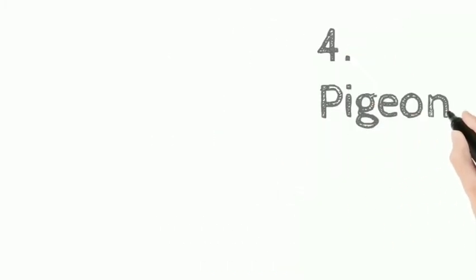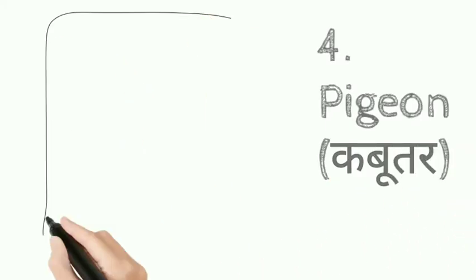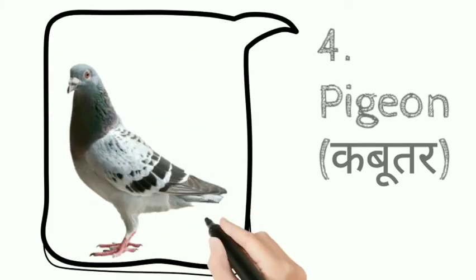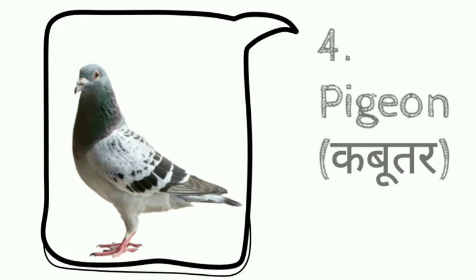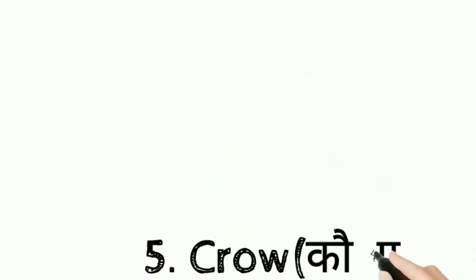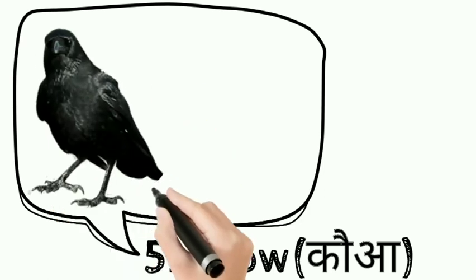Fourth: Pigeon, P I G E O N. Pigeon means kabooter. Fifth: Crow, C R O W. Crow means koa.